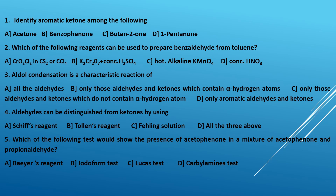Third question: aldol condensation is a characteristic reaction of — A, all aldehydes; B, only those aldehydes and ketones which contain alpha hydrogen atoms; C, only those aldehydes and ketones which do not contain alpha hydrogen atoms; D, only aromatic aldehydes and ketones. Aldehydes and ketones which contain alpha hydrogen atoms can undergo aldol condensation, so the correct answer is B.